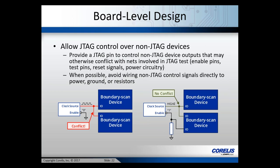Your board will also have non-JTAG devices. Ideally, allow JTAG control over non-JTAG devices where possible. A good example: if a clock oscillator's enable pin is tied to ground, the clock is always enabled and those pins can't be tested via boundary scan because the active clock interferes. The workaround is to take a boundary scan pin from one of the devices and connect it to the enable pin, so you can disable the clock during JTAG testing.